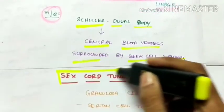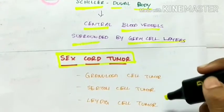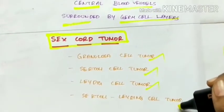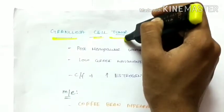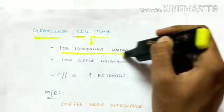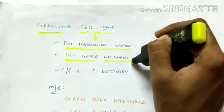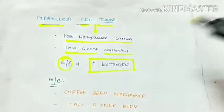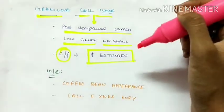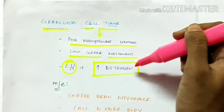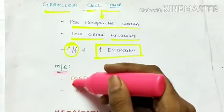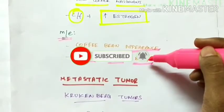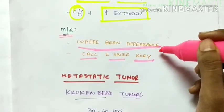Coming to the sex cord tumors. This includes granulosa cell tumor, Sertoli cell tumor, Leydig cell tumor, and Sertoli-Leydig cell tumor. The granulosa cell tumor is commonly seen in postmenopausal women and is low grade malignant. Clinical features include increased secretion of estrogen, because the granulosa cells secrete estrogen. Microscopically, there is coffee bean appearance and characteristically the Call-Exner body. The Call-Exner body is characteristic of granulosa cell tumor, as is the coffee bean appearance.